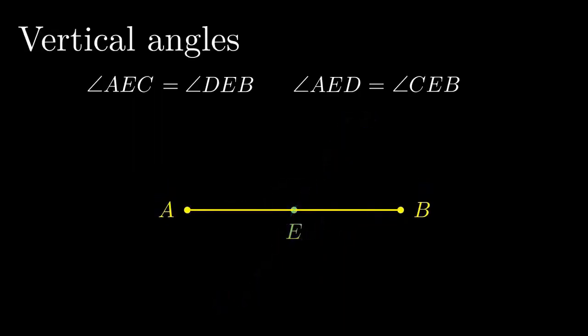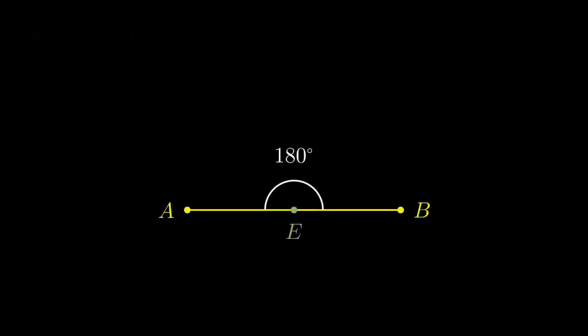In the same way as before, we have a line segment AB and a point E at the center of AB. The measure of the angle AEB is 180 degrees. Now, we put back the line segment CD. Here is the angle DEB. Because the measure of the angle AEB was 180 degrees, the measure of the angle AED is 180 minus the measure of the angle DEB.